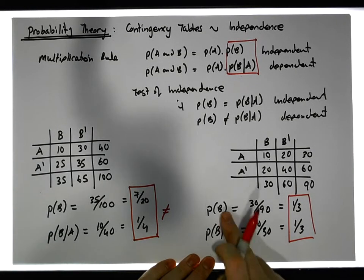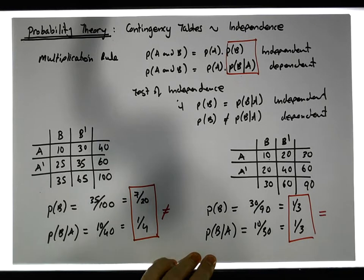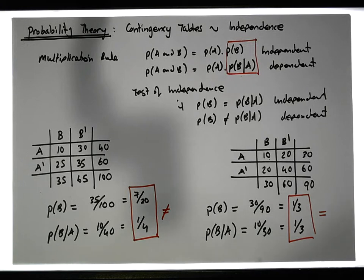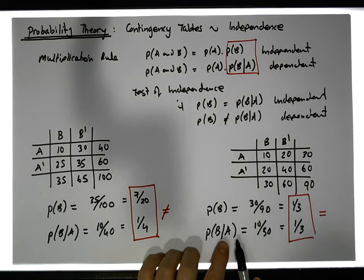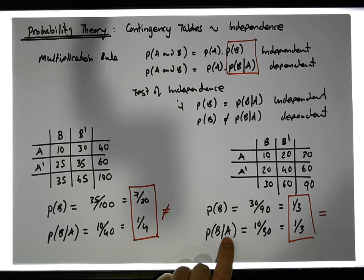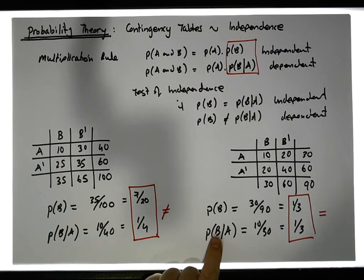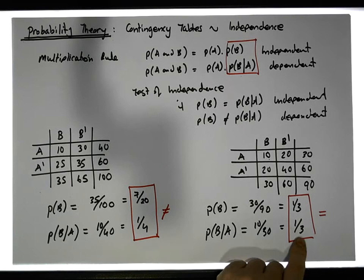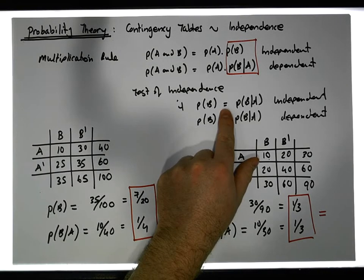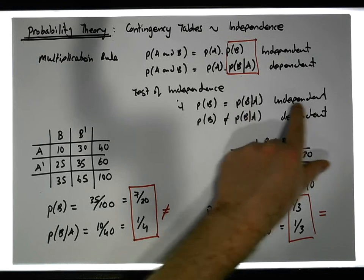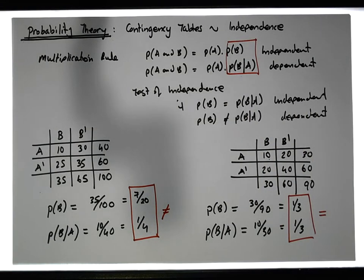What we actually have in this situation is that the two probabilities — the probability of B and the probability of B knowing that A has happened — are equal to each other. The extra information provided didn't change the probability of B. Calculating P(B) with no other information gave us one in three, and calculating P(B|A) still gave us one in three. So in this case, we say that A and B are independent of each other.